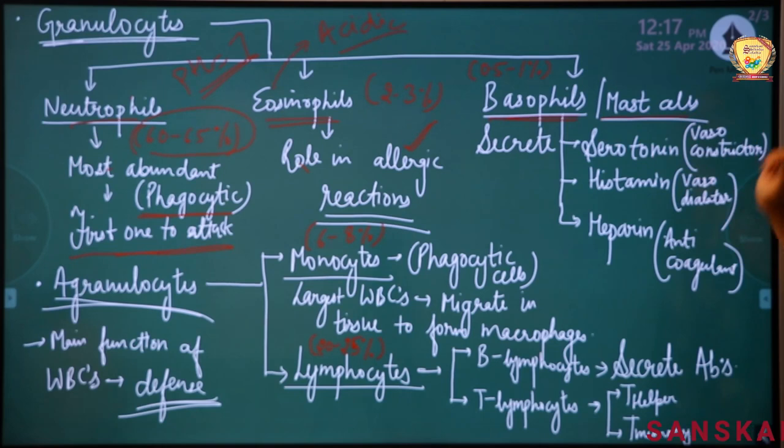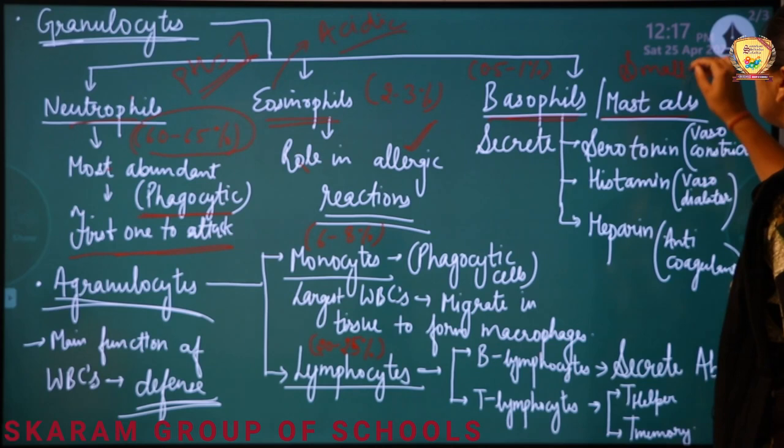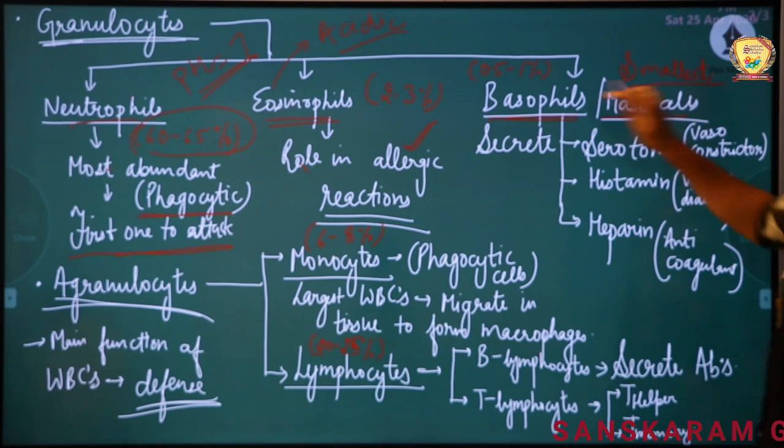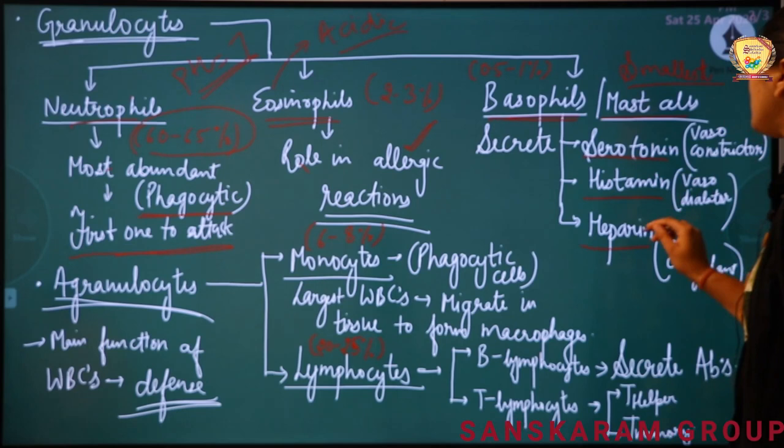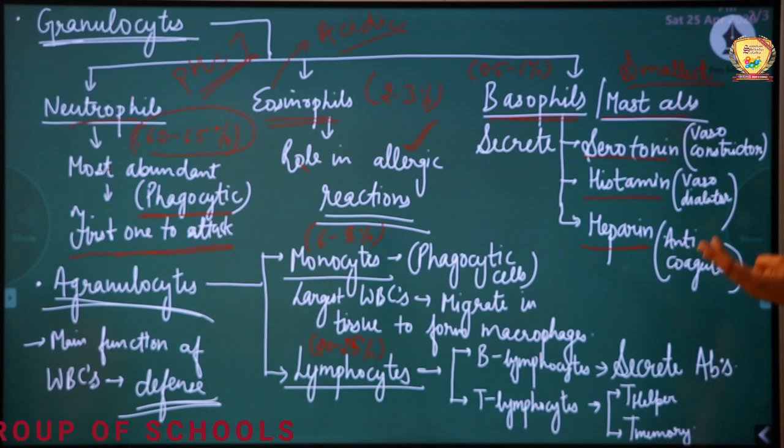Coming to the third and most important type: these are basophils and mast cells. These are the smallest WBCs. Their function is that they secrete three very important chemicals: serotonin, histamine, and heparin.